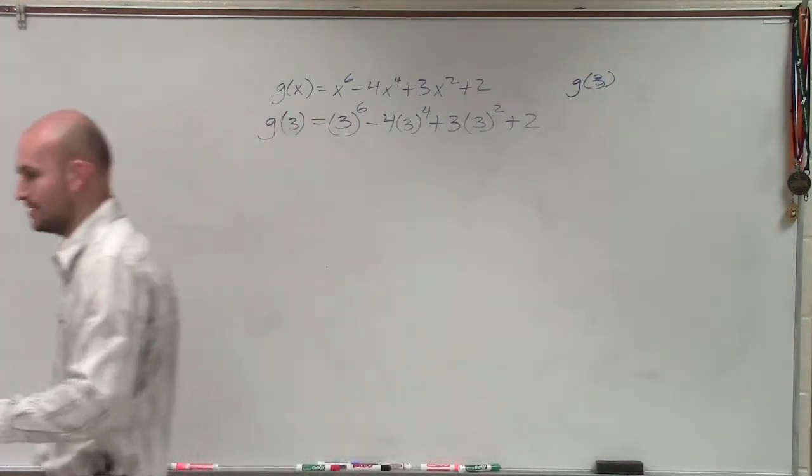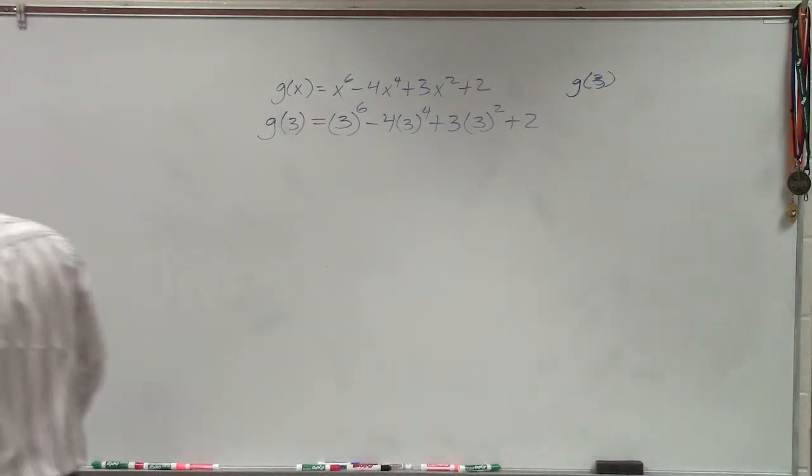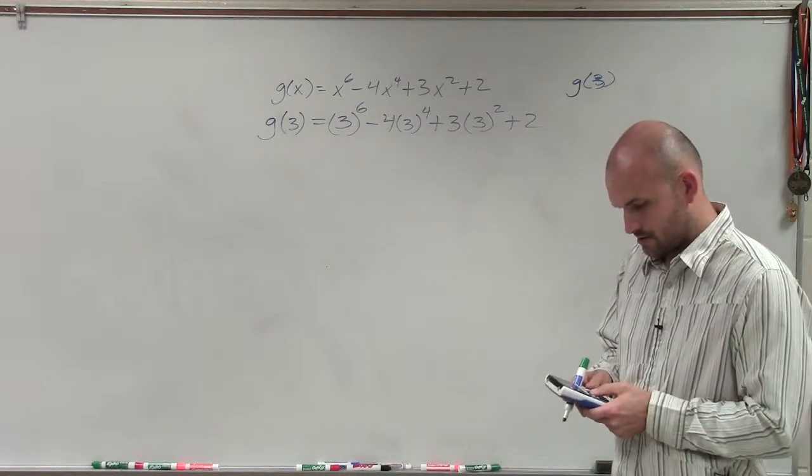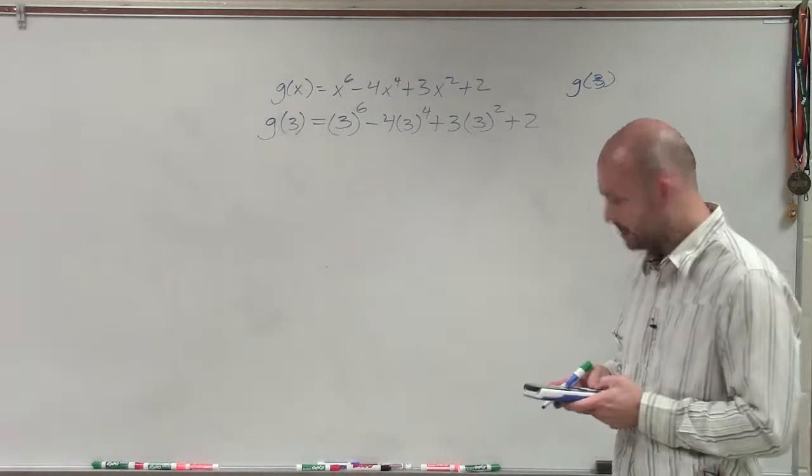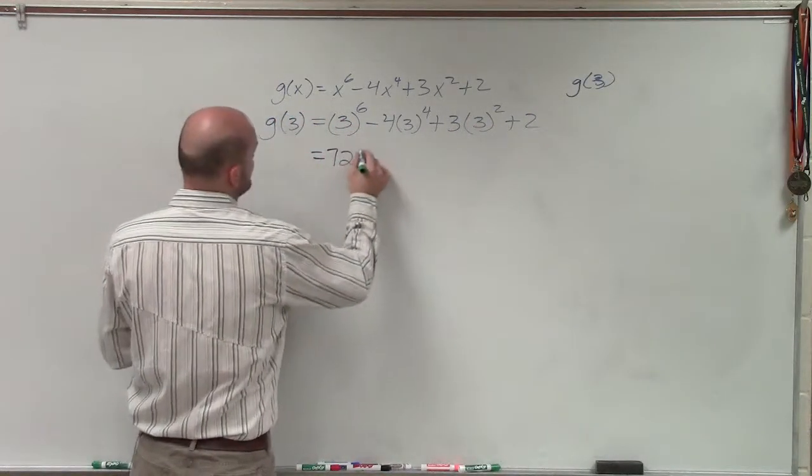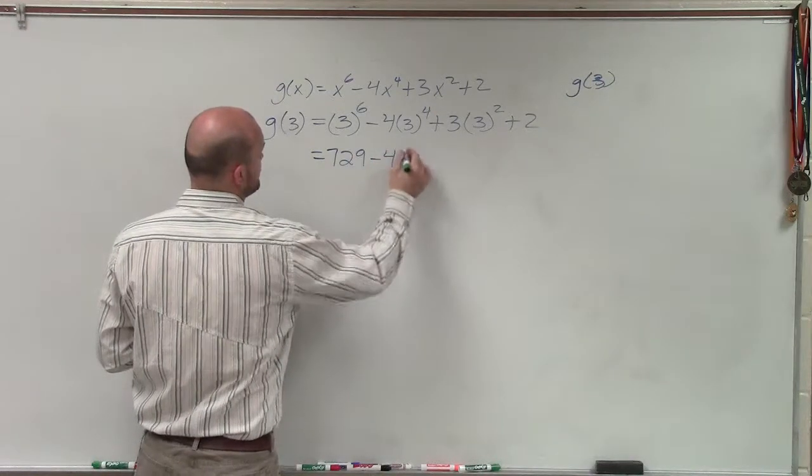Alright, can I borrow your calculator? Because I do not know what 3 to the 6th power is off the top of my head. So 3 raised to the 6th power equals 729 minus 4.